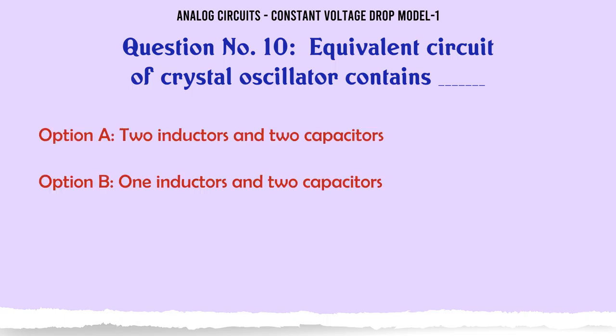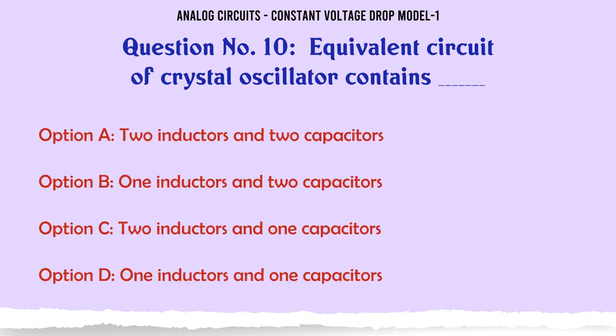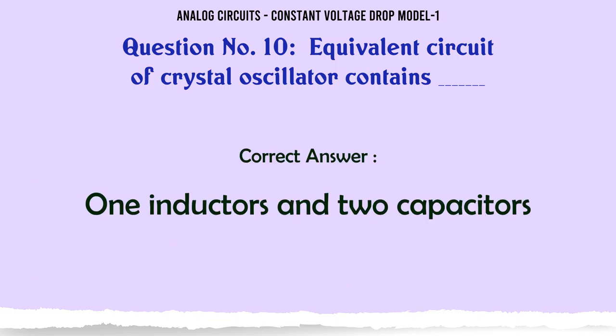Equivalent circuit of crystal oscillator contains — A) Two inductors and two capacitors, B) One inductor and two capacitors, C) Two inductors and one capacitor, D) One inductor and one capacitor. The correct answer is one inductor and two capacitors.